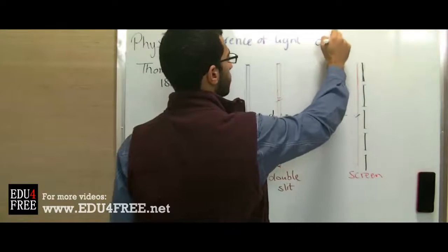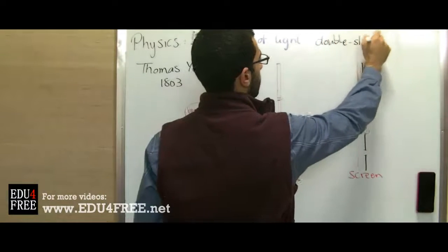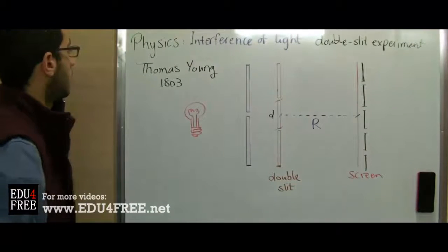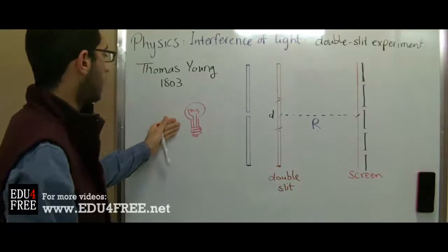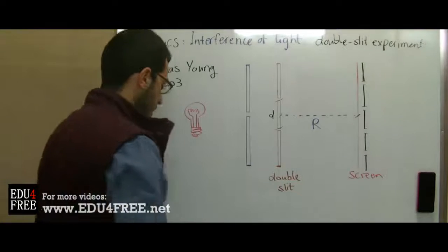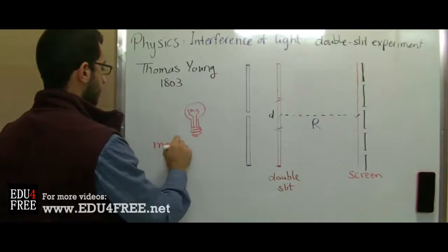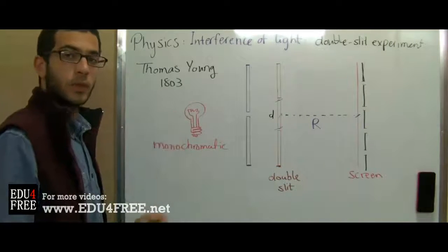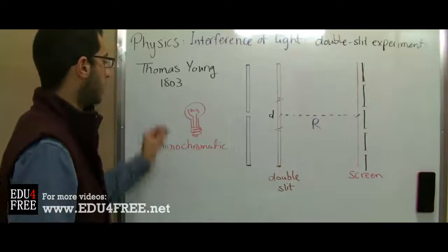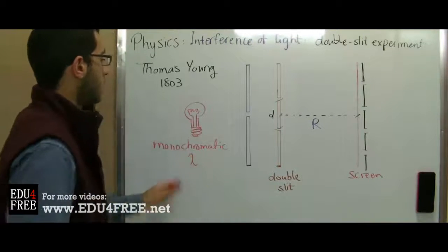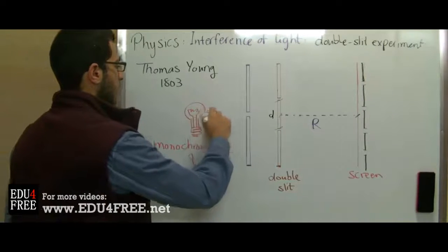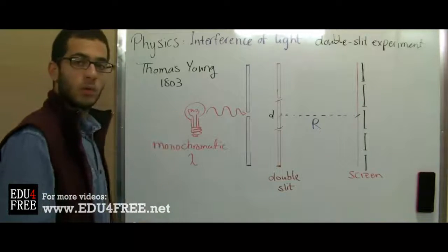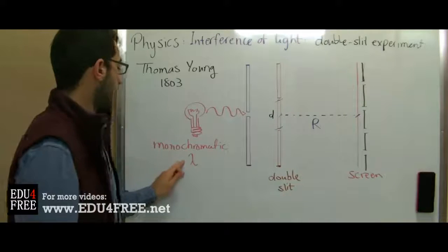The scientist Thomas Young used a monochromatic light source, and the word monochromatic light source means that this is a source that produces light with a known wavelength — let's say lambda. So the wavelength of this light produced by this light bulb, for example, is known and fixed so that it can be used easily in doing the calculations.